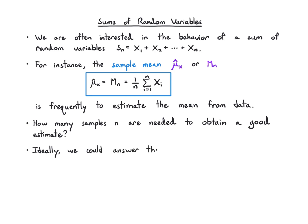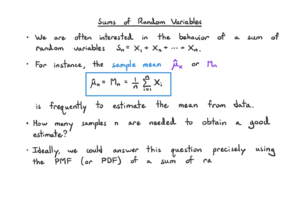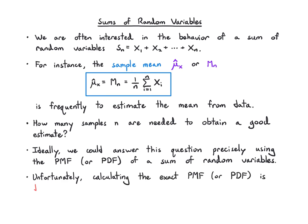Ideally, we would get precise answers using the PMF or PDF of the sum of random variables itself. Unfortunately, calculating that exact PMF or PDF is quite difficult, even in simple scenarios. If the random variables are independent and I want the PMF or PDF for their sum, I need to do n convolution operations to get that PMF or PDF. You can see why that gets pretty challenging right away.